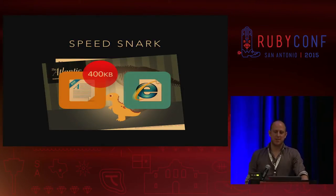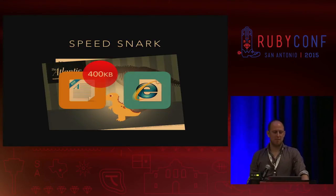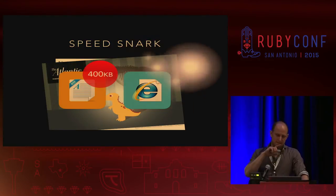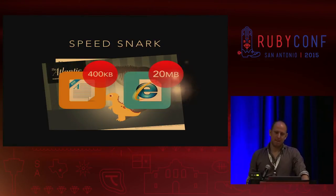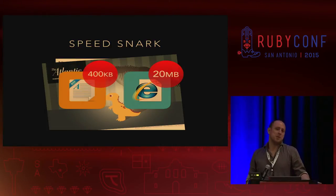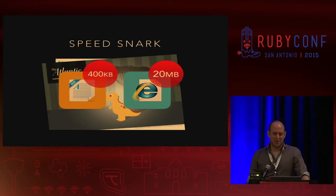If you were to download this over the internet on the Atlantic website — a modern publication — that's how big it is. We're on the extreme end here. A lot of that stuff is video ads. When I visited with an ad blocker, it was only about 3 meg. So that's sort of nuts. It's this many floppy disks.